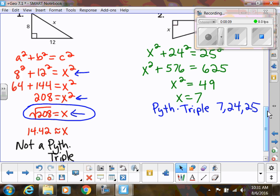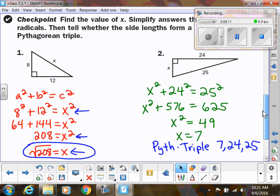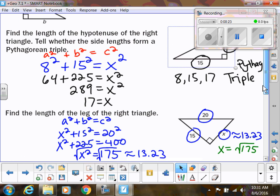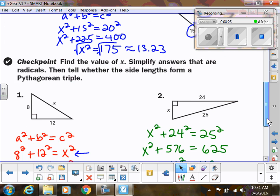So second example, you should have gotten x equals 7, which means that it is a triple. So we have a triple of 7, 24, and 25. So we have two examples where we had triples. So 7, 24, 25 was one. And then 8, 15, and 17 was another one.